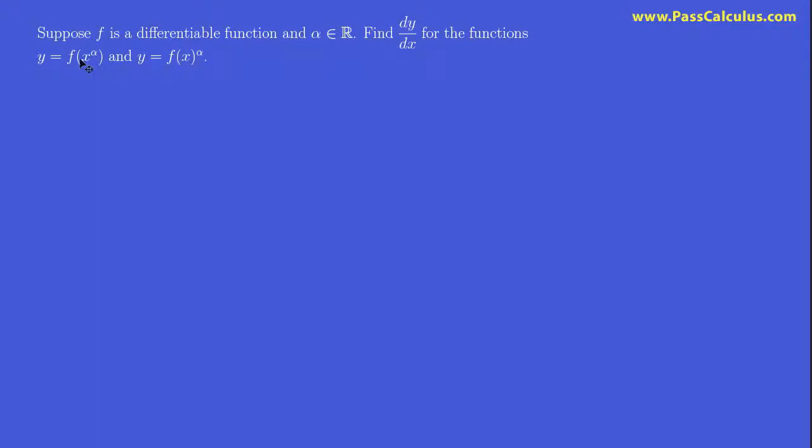Now, notice the difference between these two. If I'm given a value of x here, I first raise it to the power of alpha, get an answer, and then do f of that number. Whereas over here, if I'm given a value of x, I first do f of x, and then raise that answer to the power of alpha. So these are definitely different functions.